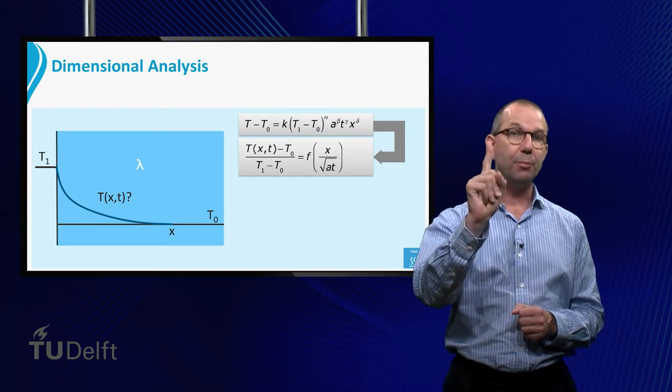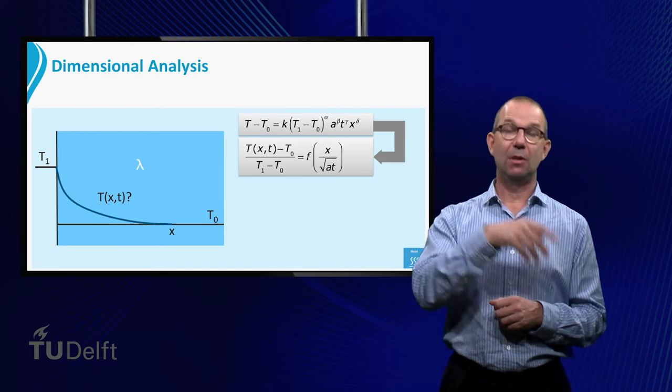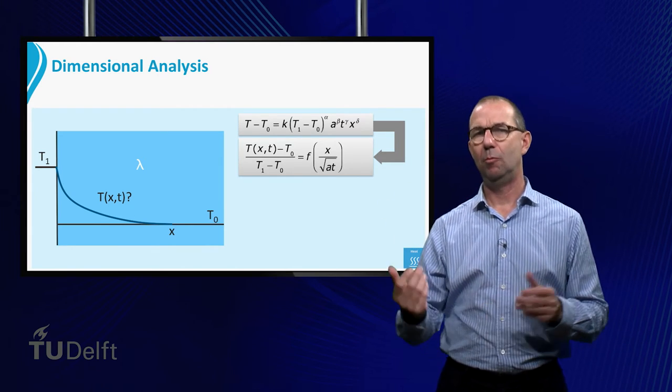Namely x over the square root of A times T. What does this tell us?